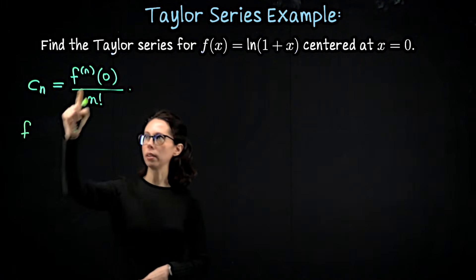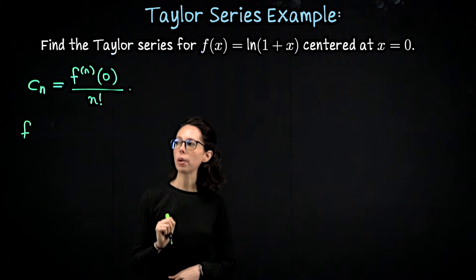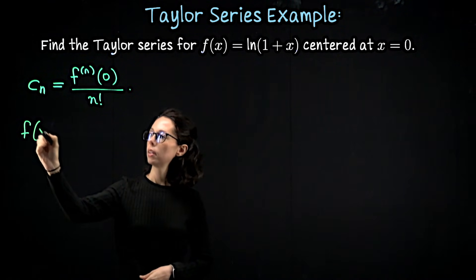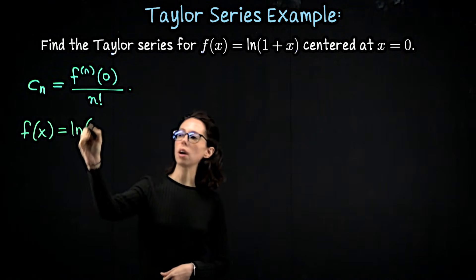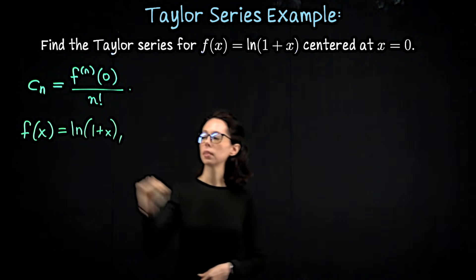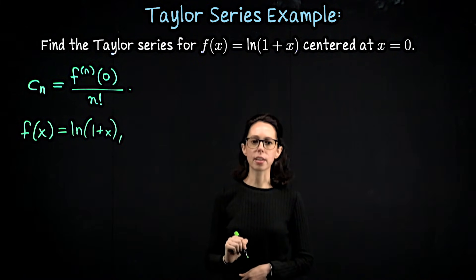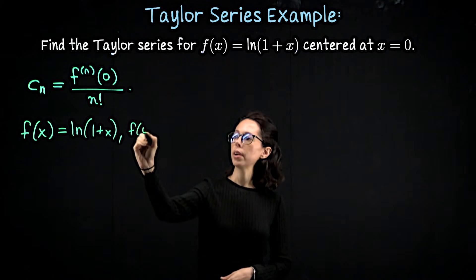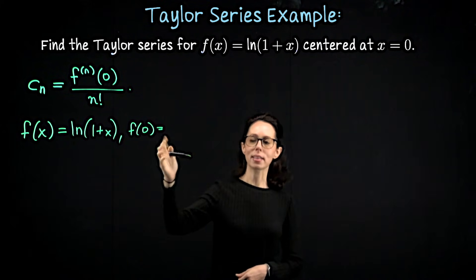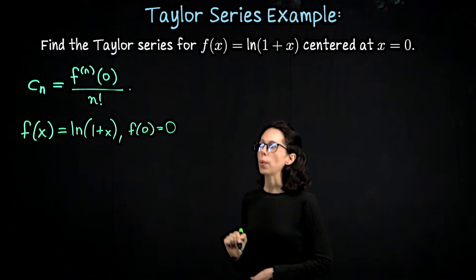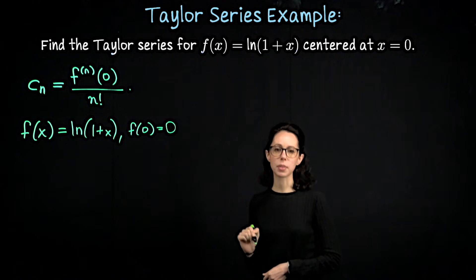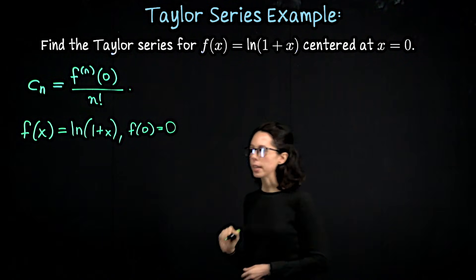The first one, corresponding to n equals 0, is actually just the function itself. So f(x) is natural log of 1 plus x. To the right, let me plug in the center x equals 0. f(0) is natural log of 1, that's 0. So actually there will be no c sub 0 constant term.